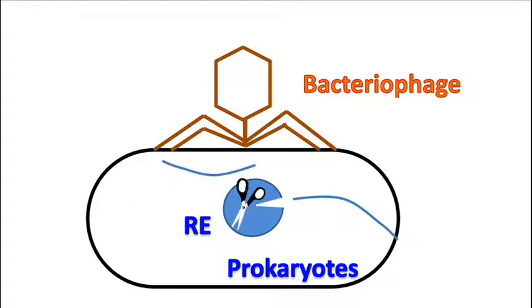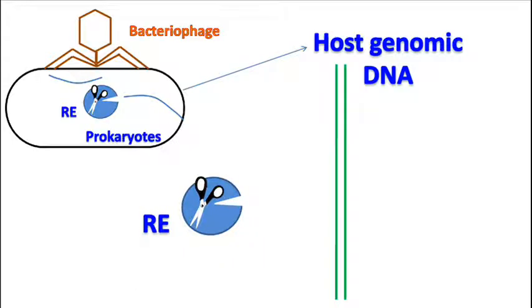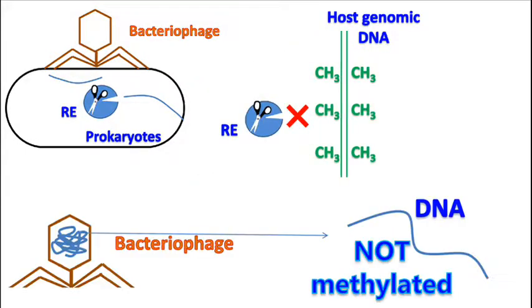Now you might wonder how the restriction enzymes do not cleave the DNA of the host cell. The answer lies in the fact that the host DNA is methylated at specific bases, whereas the DNA of bacteriophage is not methylated.